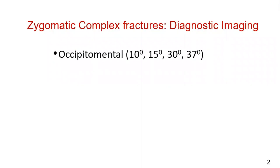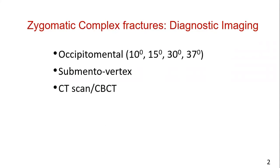The most common conventional radiograph available for zygomatic complex fracture is the occipitomental view, taken at different degrees. There is a principle that you should take at least one radiograph at two angles. Second is the submentovertex CT, CBCT, or 3D CT if facility is available.